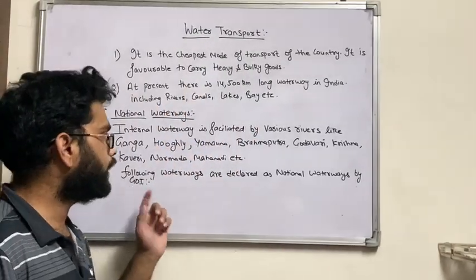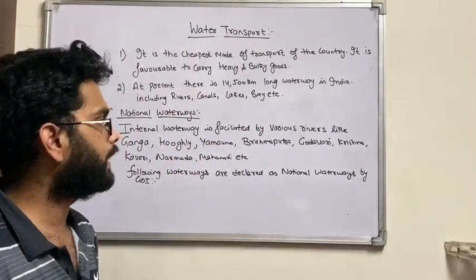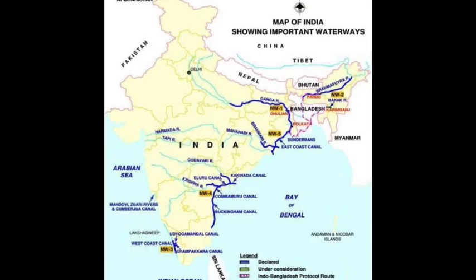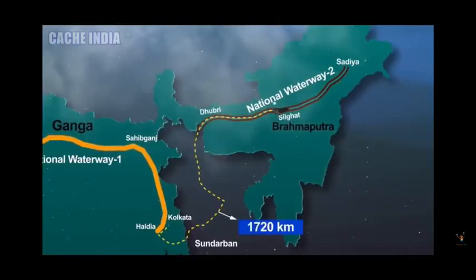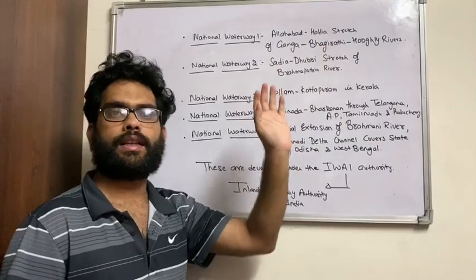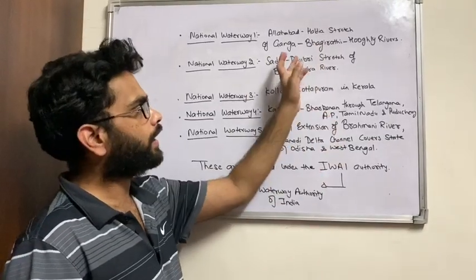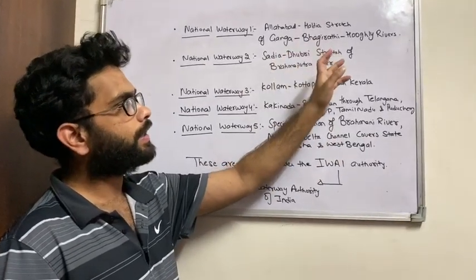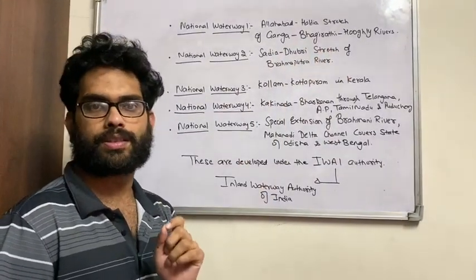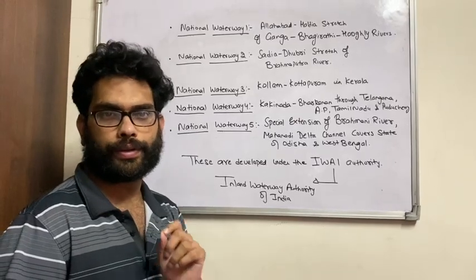The following waterways are declared as national waterways by the Government of India. National Waterway 1 connects the cities of Allahabad and Haldia — Haldia is in Bengal — and it covers the Ganga, Bhagirathi, and Hooghli rivers. This is called National Waterway 1.